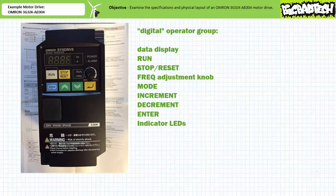Nonetheless, the digital operator group contains the data display, the run button, the stop reset button, the frequency adjustment knob, the mode button, increment and decrement buttons, enter, and several indicator LEDs.